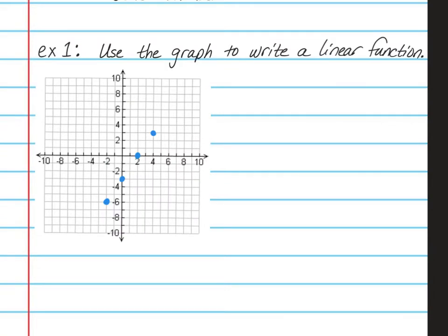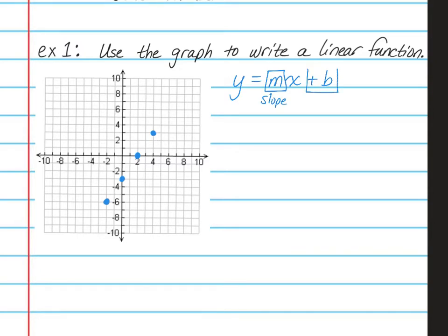Let's take a look at this first example. Please pause the video and draw yourself a graph that has these points and the directions. If we want to write a linear function, remember a linear function is written as Y equals MX plus B, where M is your slope and B is your Y-intercept.